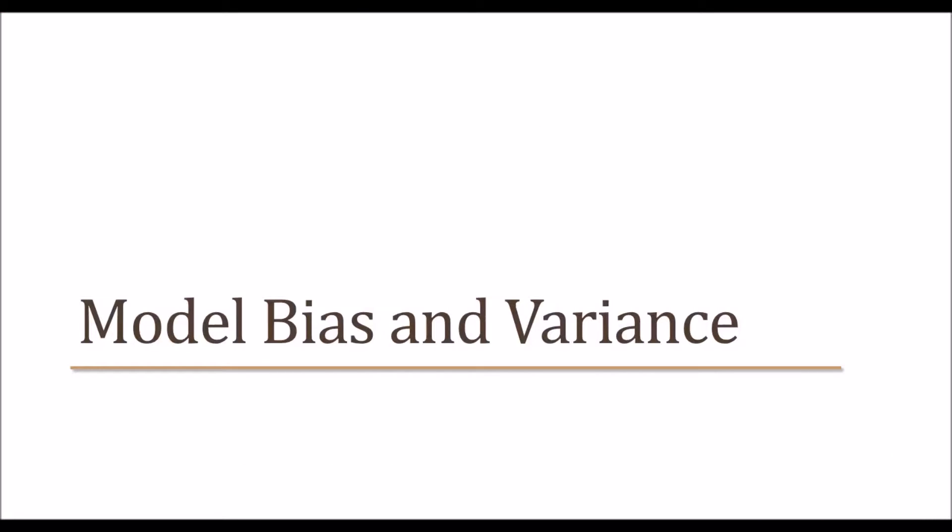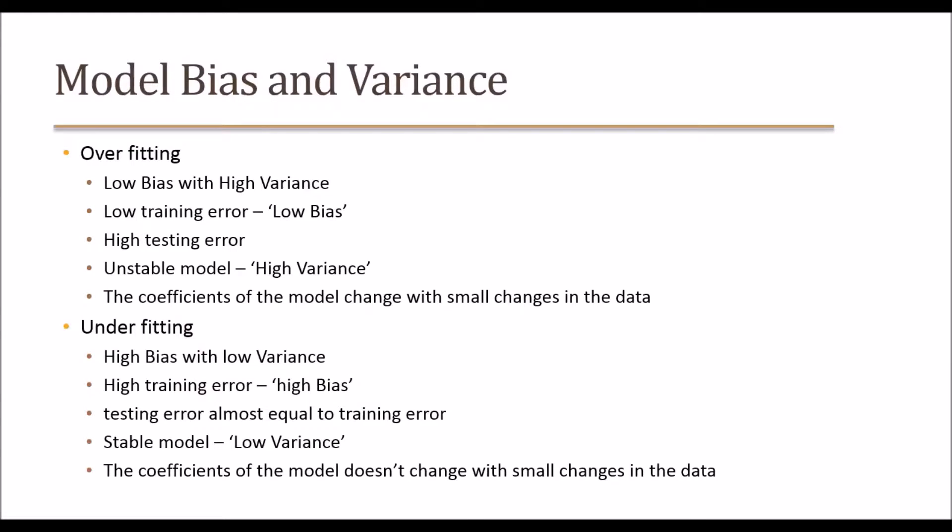Let us do a recap of models with huge bias and huge variance. Overfitted models will have low bias — that means we don't lose any information available in the training data set — but they will have huge variance because we try to overfit every variation within the training sample, fitting the best model just for that data set. Whenever there is a small change from that data set, we tend to make a lot of error. So an overfitted model will have low training error, so low bias, but high testing error — it's a very highly unstable model with high variance.